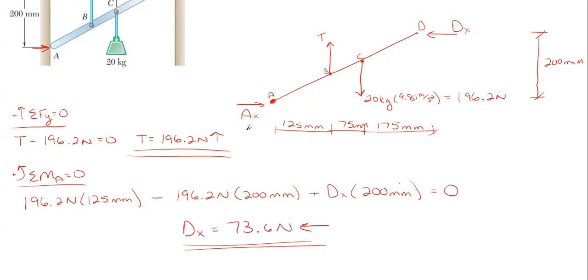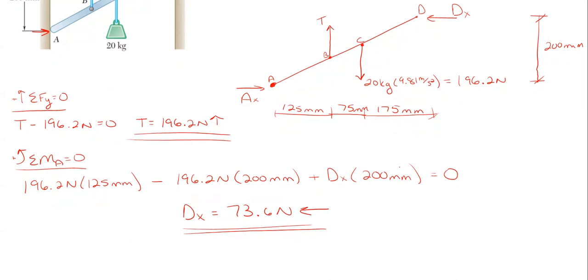We only have one more reaction to determine, that's A_X. We can just sum forces in the X direction. As you can see, A_X and D_X are going to be equal to each other but in opposite directions. We had A_X minus 73.6 newtons from D_X equals zero, and A_X is just going to be the same as D_X, just in the opposite direction, acting to the right.